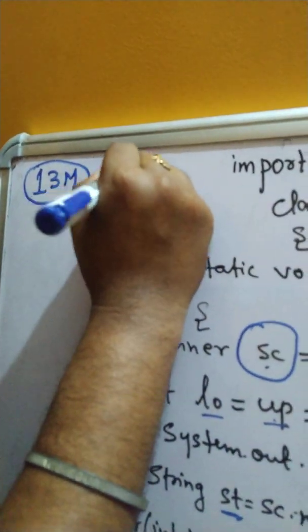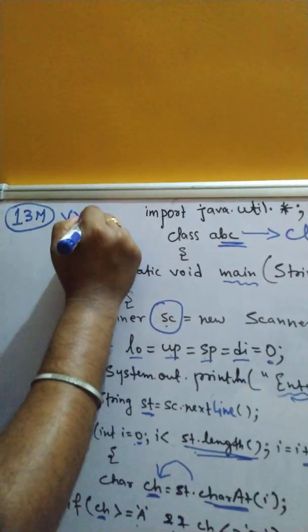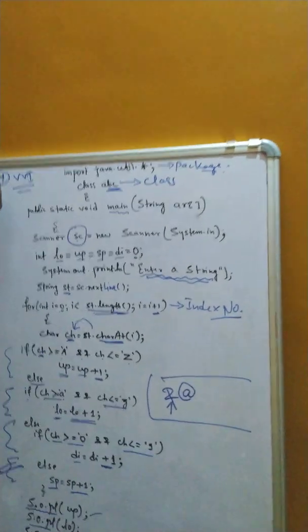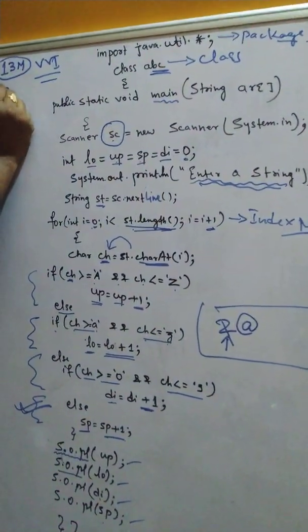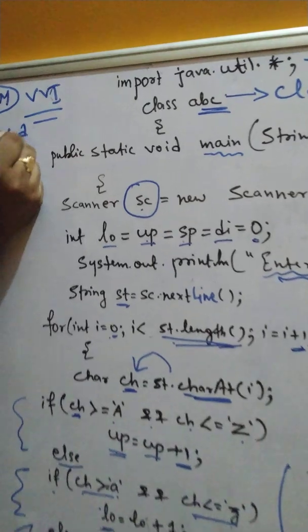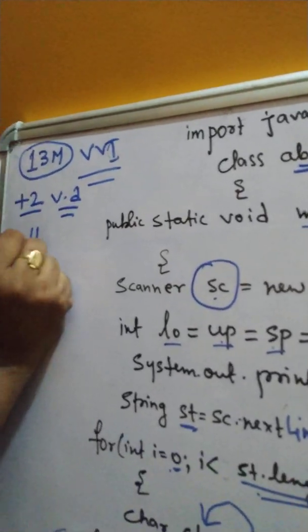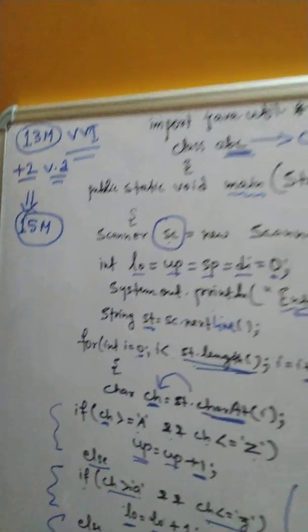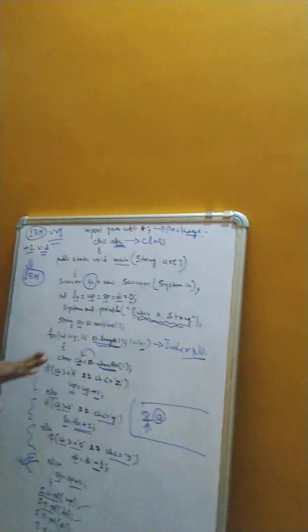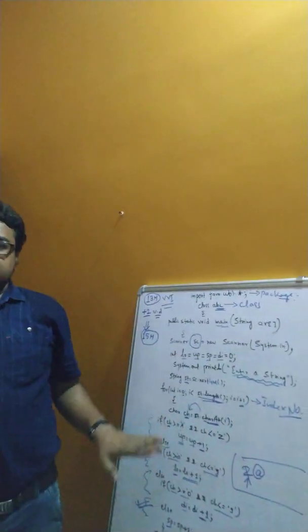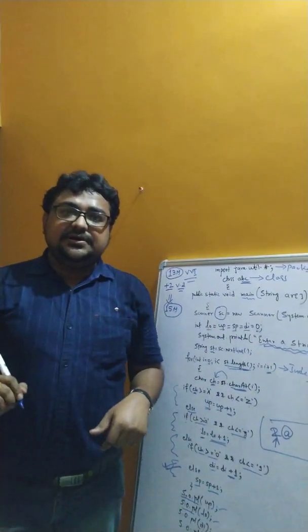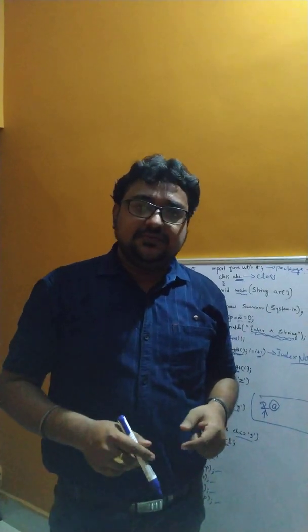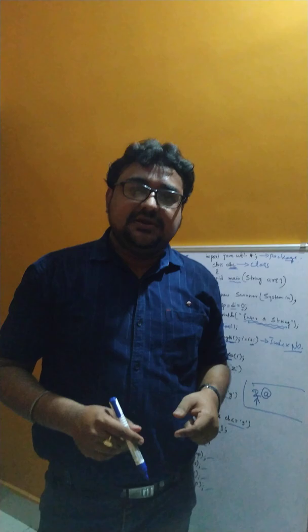Very important. VVI, very important for the board exam. This is of 13 marks programming and plus 2 for the variable description. Variable description, altogether, this will be of 15 marks. Variable description, I think you all know. So, you please go through the programming, understand the programming and if any doubt will be there, then definitely during the online class, you can ask me, I will explain to you. So, thank you everyone. Have a nice day.